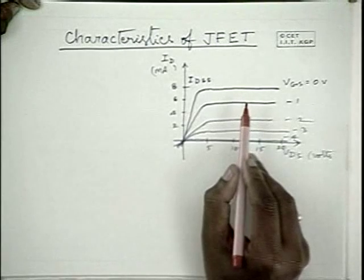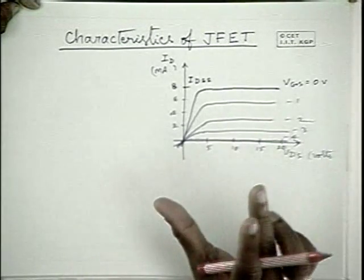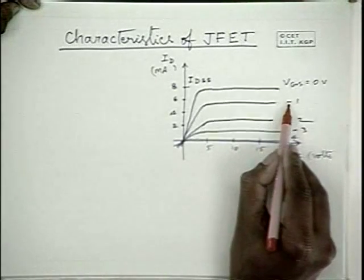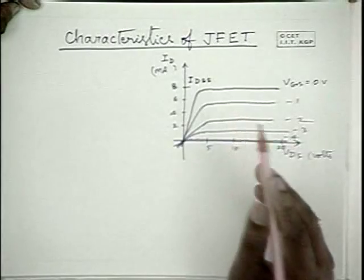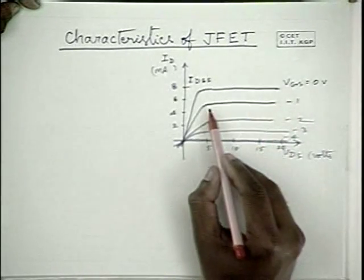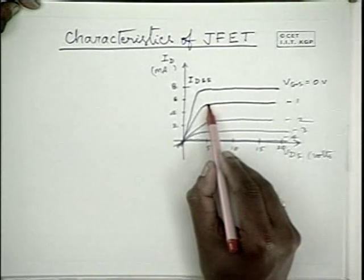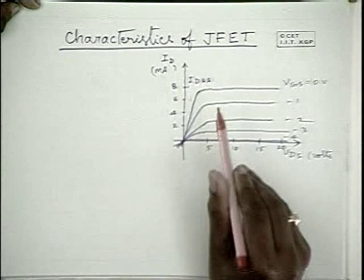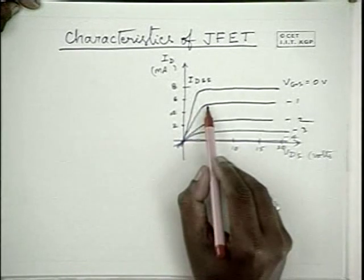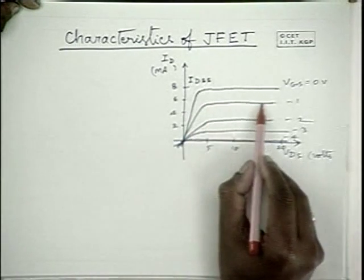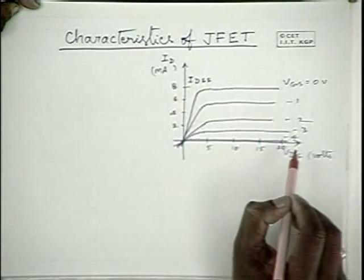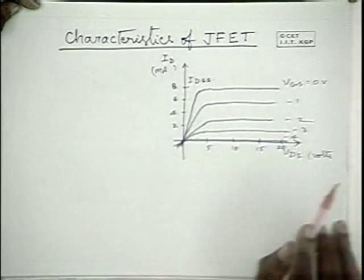That is because of the differential voltage difference between the drain and source. When VGS is about minus 1 volt, VDS would be more negative, and because of which the channel gets pinched off and the free charge particles remain constant, and as a result, the current remains constant beyond certain voltage level. As a result, the current saturates in this fashion.